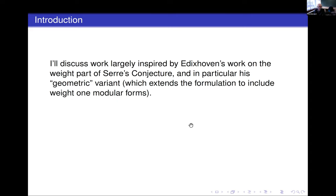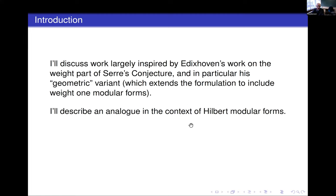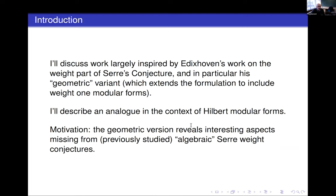There's an important difference involved here. For one thing, you have to be careful about what you mean by a modular form of weight one. In particular, you need to take a much more geometric perspective. I'll remind you of this, and then describe an analog in the context of Hilbert modular forms, again related to what Hanukkah discussed last week but from a much more geometric perspective. The motivation is that this geometric version, inspired by Bas's variant, reveals aspects missing from the original Serre conjecture and from generalizations involving algebraic Serre weights.